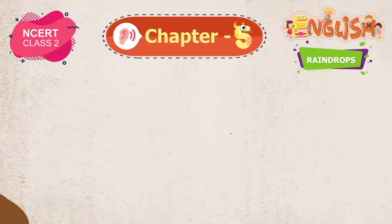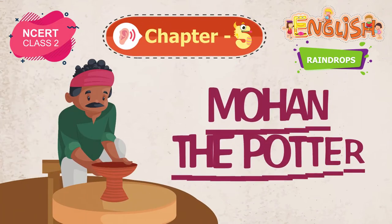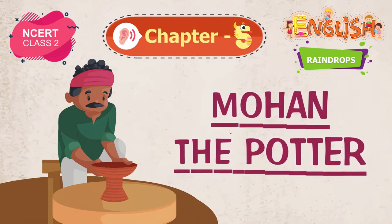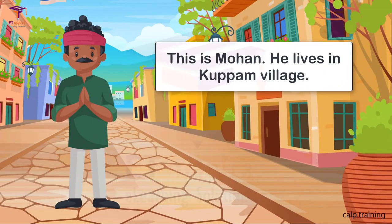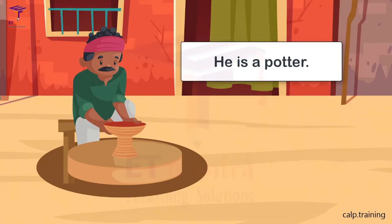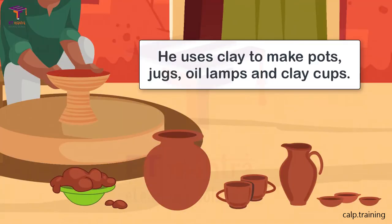Chapter 5: Mohan the potter. This is Mohan. He lives in Kuppam village. He is a potter. He uses clay to make pots, jugs, oil lamps and clay cups.